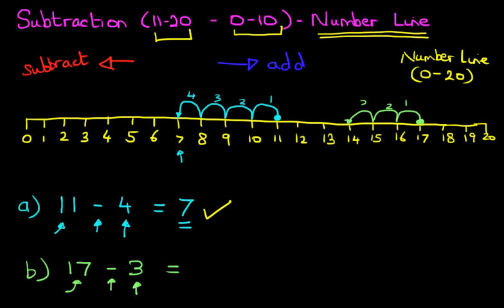1, 2, 3. What number have we landed on? It is number 14, and that is the answer. 17 minus 3 equals 14. Now, it really is that simple.